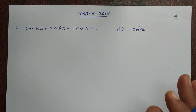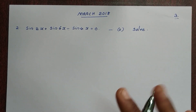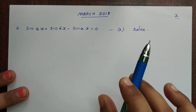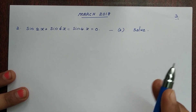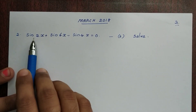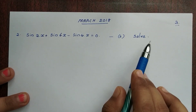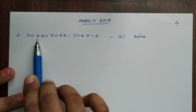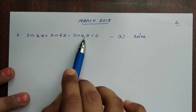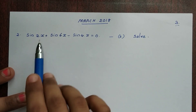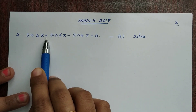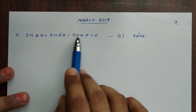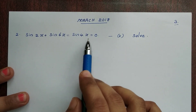We will start the problem with the principal and general solution. Here we have three terms: sin2x, sin6x, and sin4x. These three terms include plus sin and minus sin, so we can separate them. We will apply a product formula to solve this.